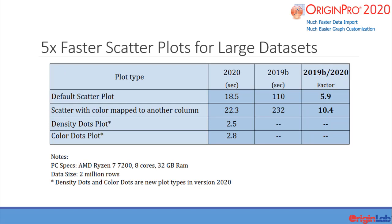Scatter plots of large datasets are drawn much faster. This includes the default XY scatter plot as well as color mapped scatter plots in which a third column is used to assign scatter point color. In addition, this new version also introduces two new plot types which produce more significant gains in plotting speed: density dots plot and color dots plot.